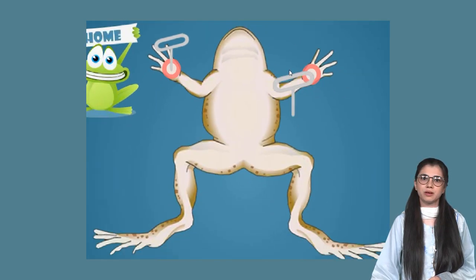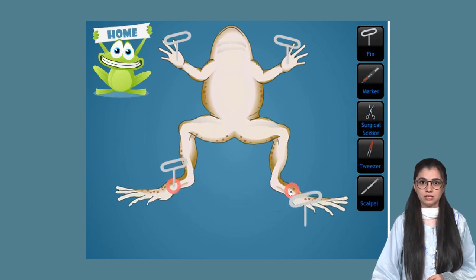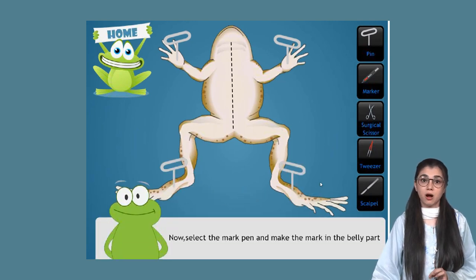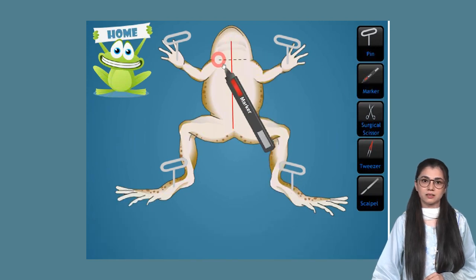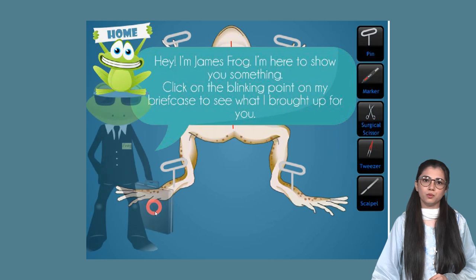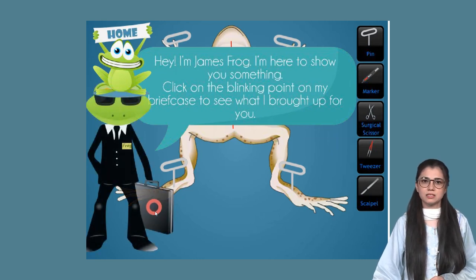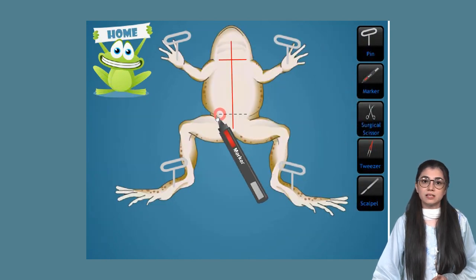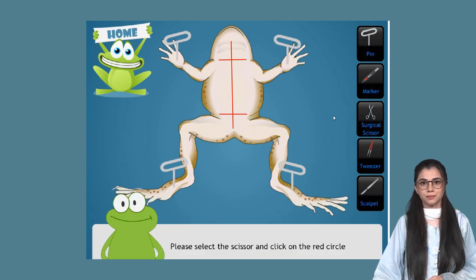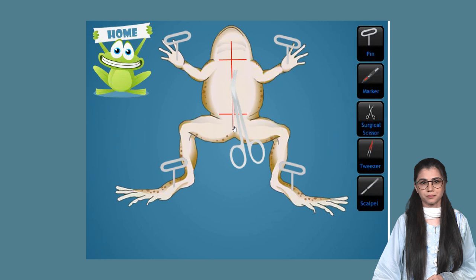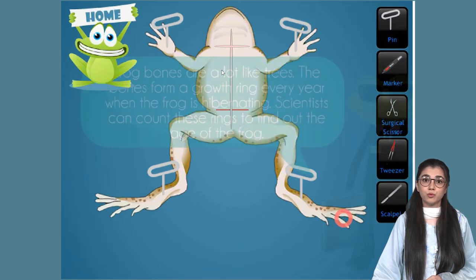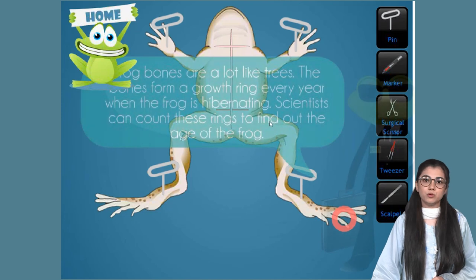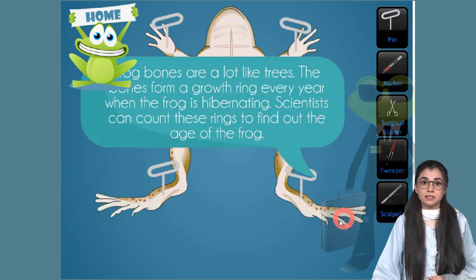First, you are going to pick the pen tool. Click on the red circle to pin it up. Now select the mark pen and mark the belly part. We have James frog with us — he will tell us about the different types of frogs. Please select scissors and click on the red circle. Did you know frog bones are a lot like trees? The bones form a growth ring every year when the frog is hibernating, and scientists can count these rings to find out the age of the frog.